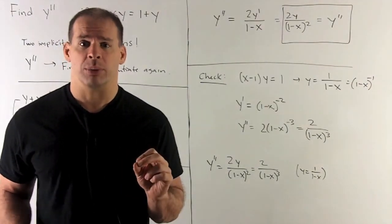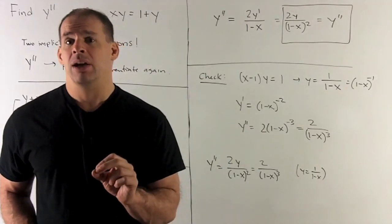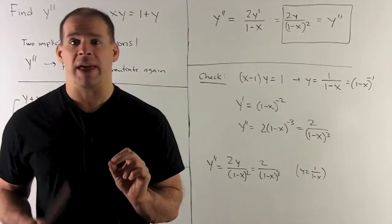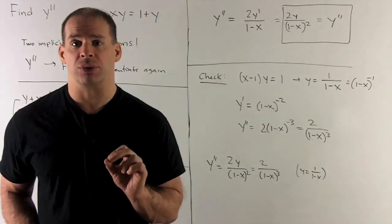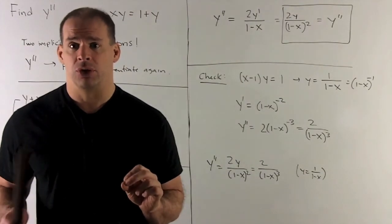For my second derivative, we bring the minus 2 down. Derivative of the inside is going to be minus 1. Remember, the exponent up in top is going to now be a minus 3. So we wind up with 2 over 1 minus x quantity cubed.